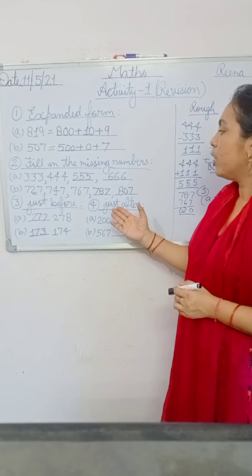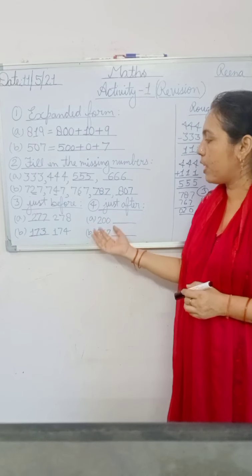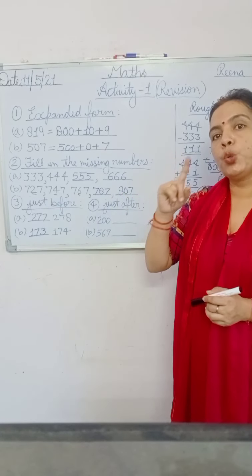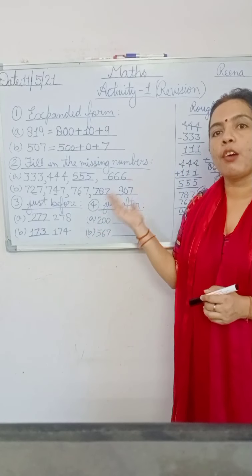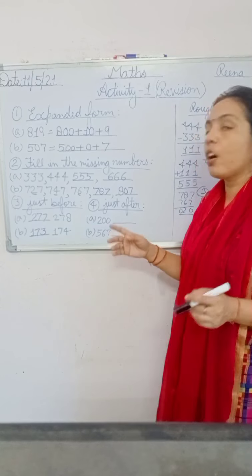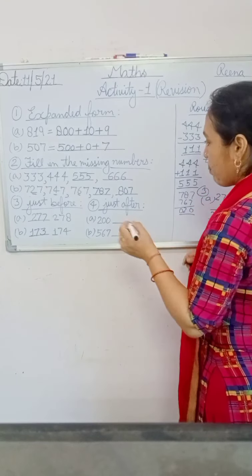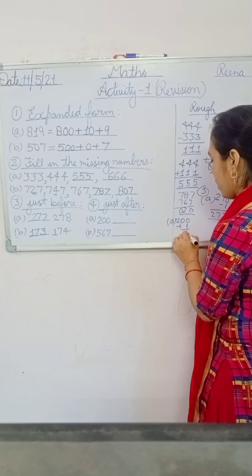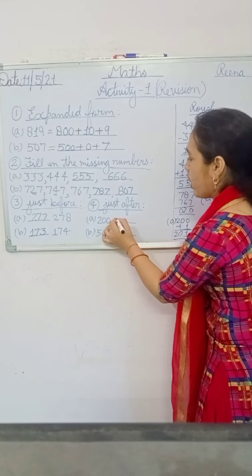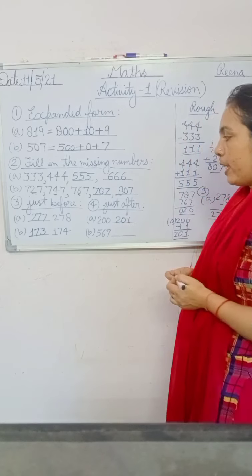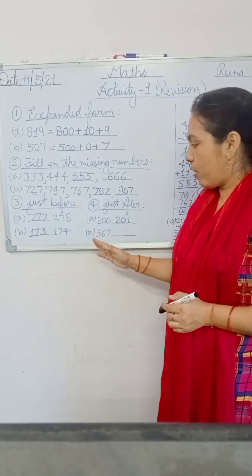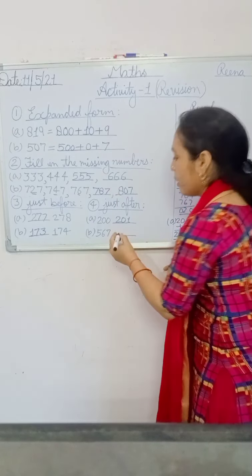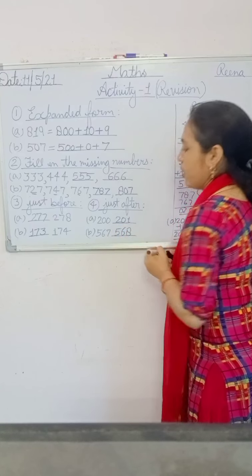For question four, you have 'just after.' You find the just after number of the given numbers. For just after, we add 1 to the given number. 200 plus 1 is 201. And for part B, 567 plus 1: seven plus one is eight — so 568 is the just after number of 567.